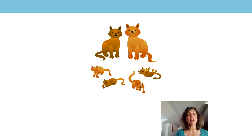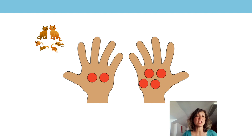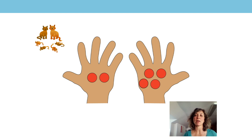So I can say it both ways. I'd like you now to pause the video and find six objects of the same thing. You might have six pieces of Lego or six pebbles. I've got six counters in this image. Can you find them and put two in one hand and four in the other? Pause the video now.